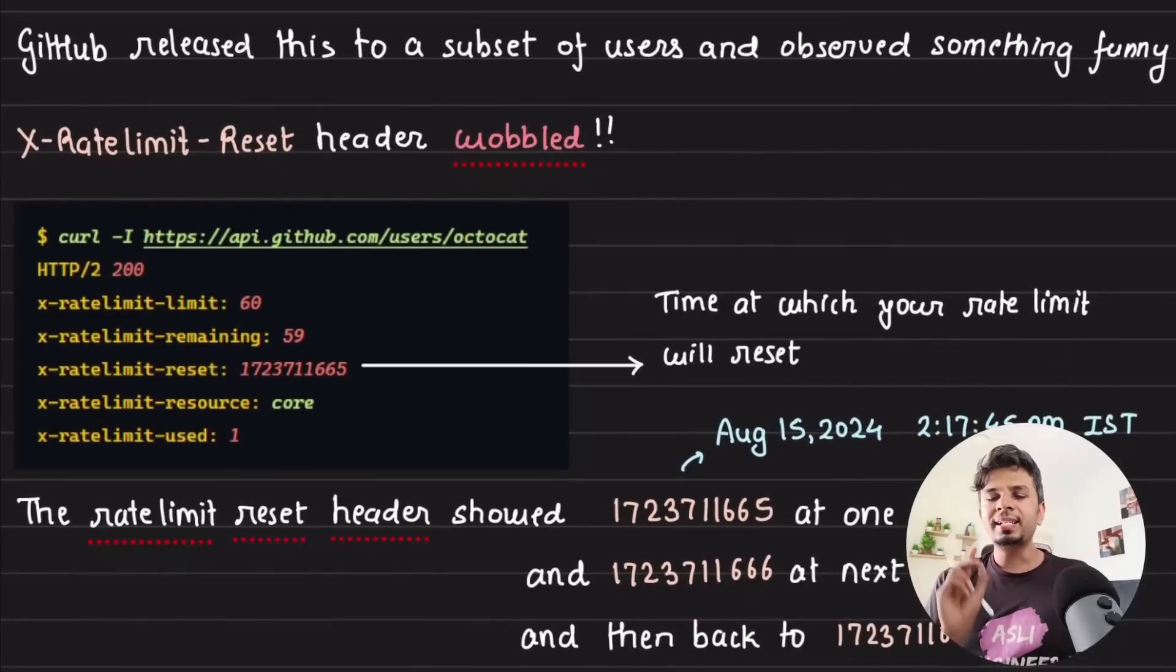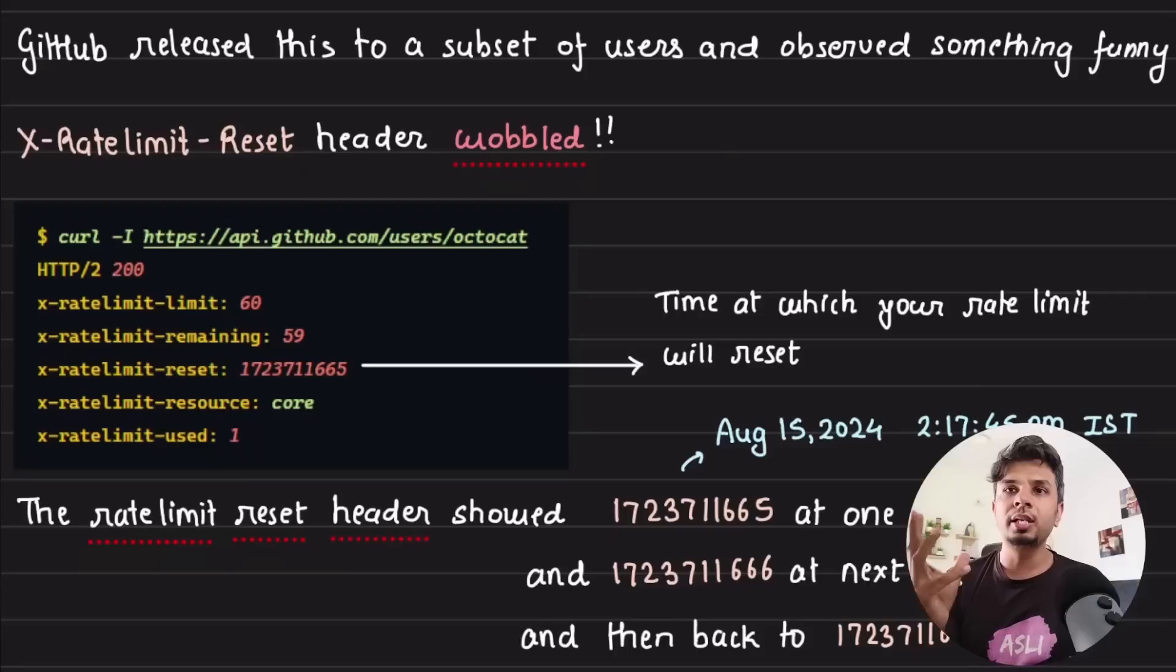So let's understand what happened. The issue is wobbling. Now what is wobbling here? So what GitHub does—GitHub, to be honest, has one of the best ways an API server can send you the response. If you look at the headers that it sends, it is a gold mine of information. We'll focus on the rate limiting headers.